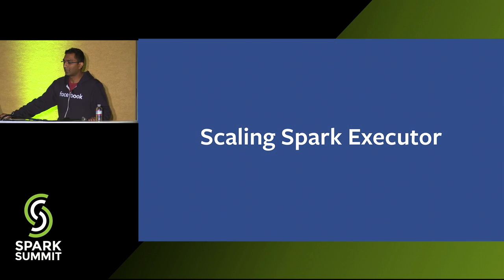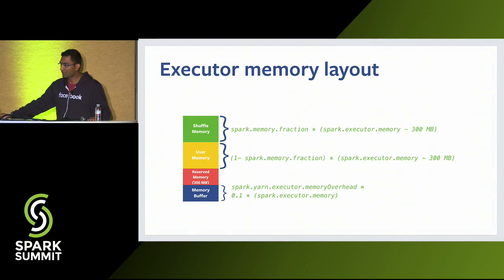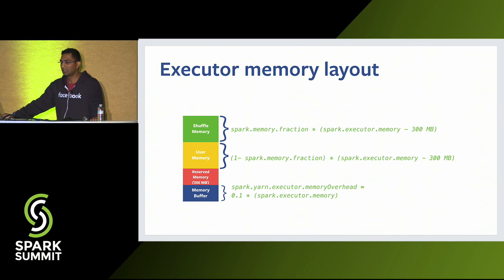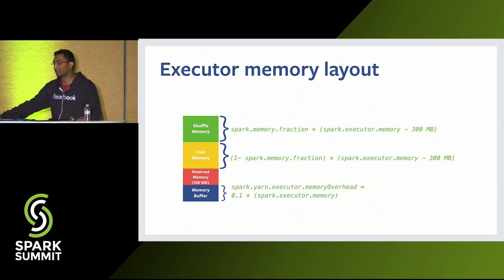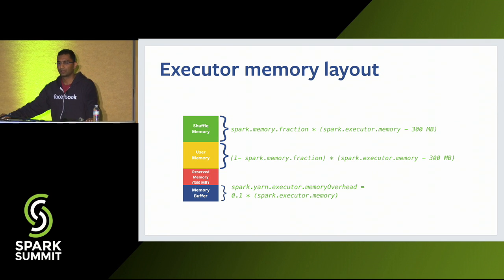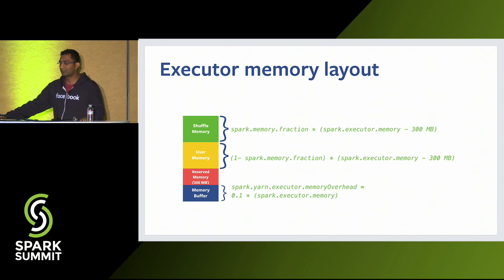Let's talk about scaling the Spark executor. One of the major challenges is executor OOM failing the job, so proper memory configuration is very crucial. The executor memory is divided into four sections: shuffle memory, user memory, reserve memory, and the memory buffer. The most interesting for tuning are shuffle memory and user memory. The shuffle memory buffers the shuffle internal data structures, and as more data is read the buffer grows until it spills to disk.